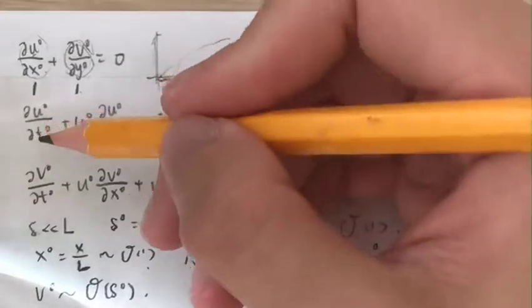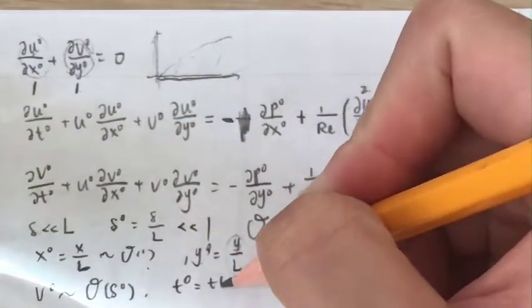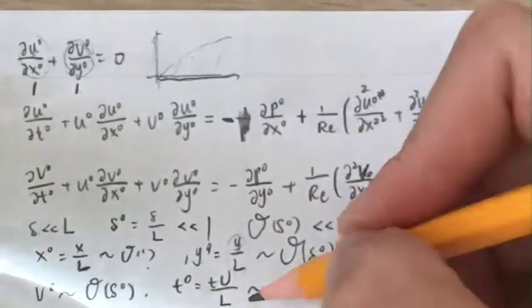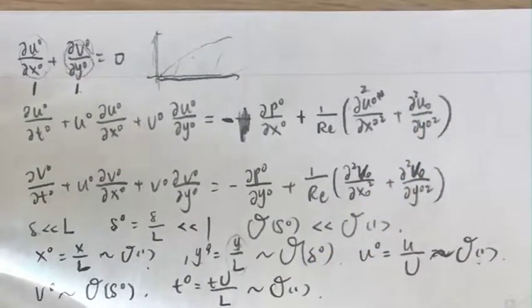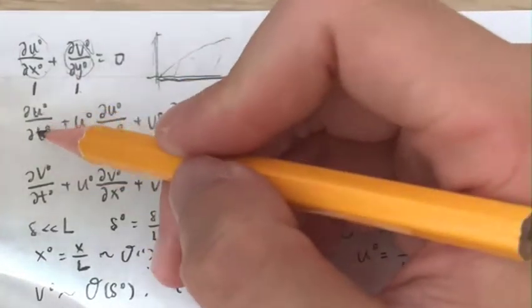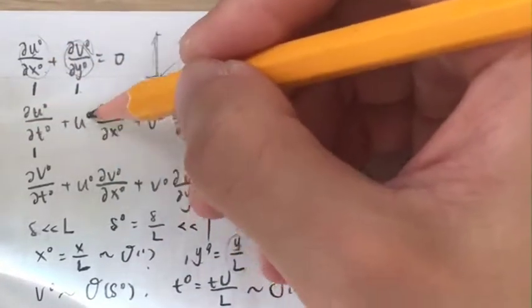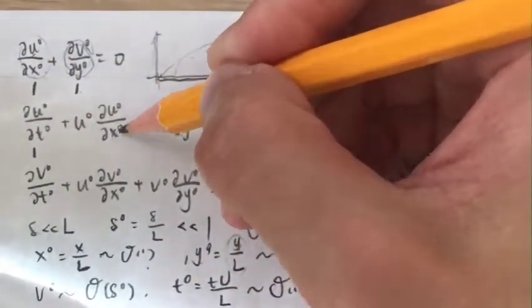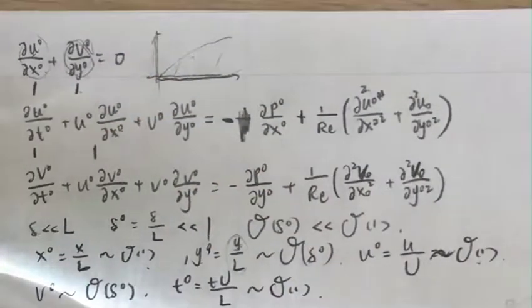Now we move to t. t-naught equals t times U over L — we assume this to be of order 1. So du-naught/dt-naught is of order 1. For the convective term u-naught times du-naught/dx-naught: u-naught is 1, du-naught/dx-naught is 1, x-naught is 1, so together this term is of order 1.